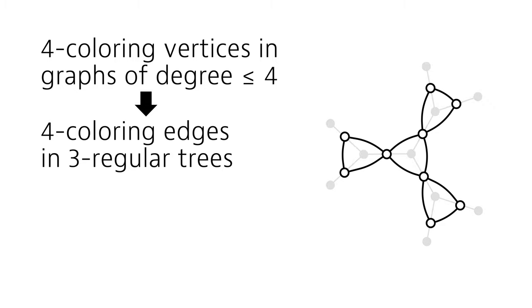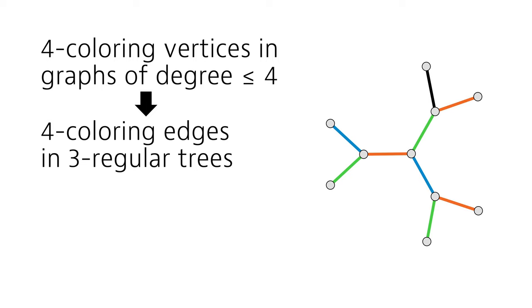This is a graph of degree at most 4. So we can find a 4-coloring of the vertices. And this will directly give a 4-coloring of the edges of the original tree.